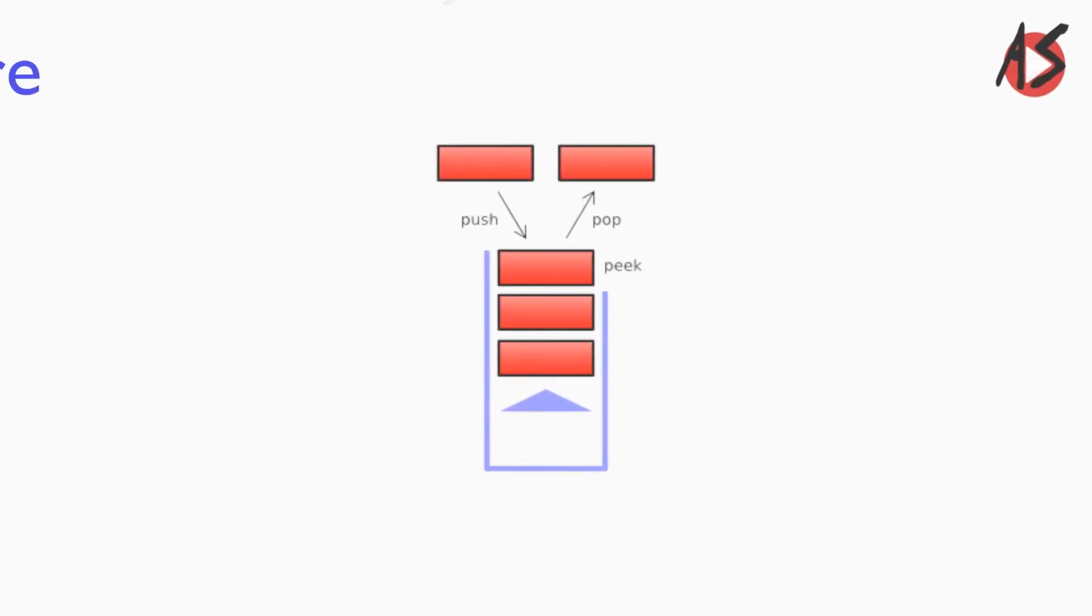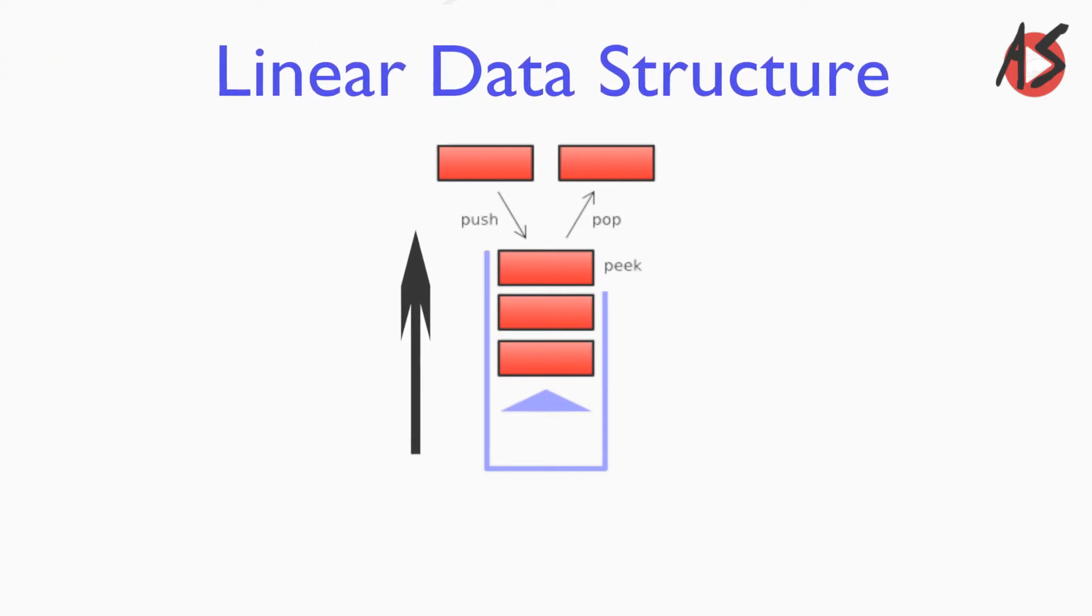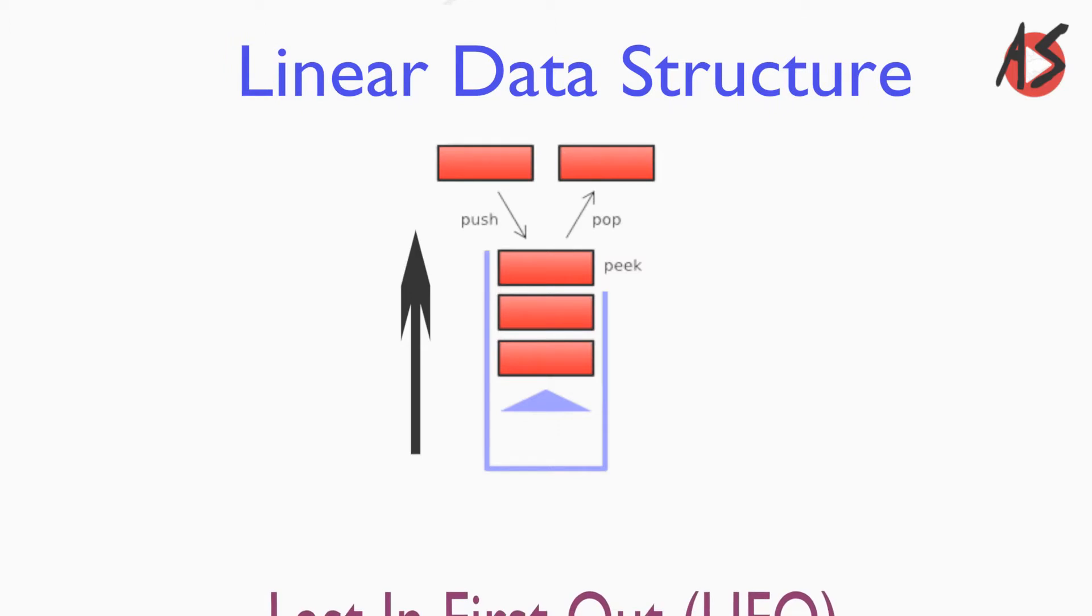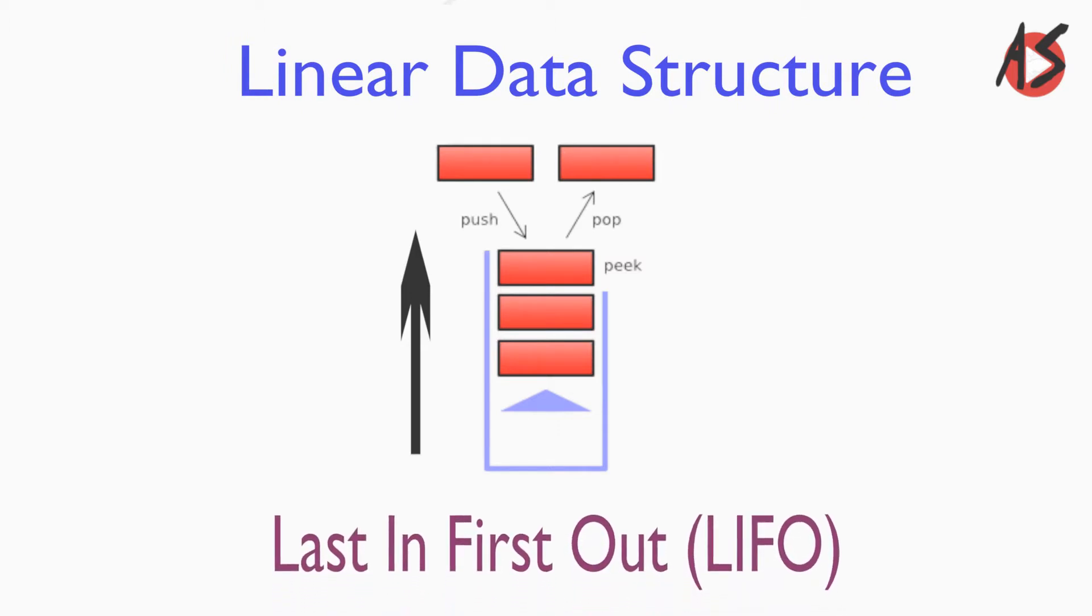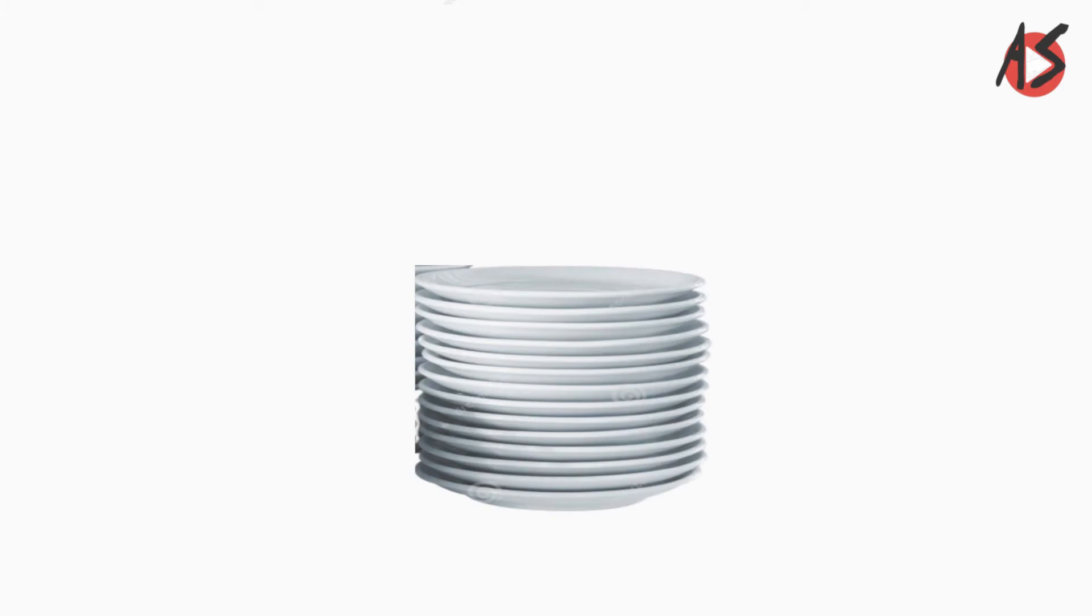Stack is a linear data structure which follows a particular order in which the operations are performed. The order is last in first out, in short it is called LIFO. The best example of this is a stack of dishes. The dish we put last we have to take first.